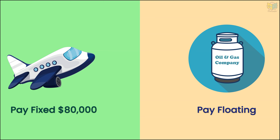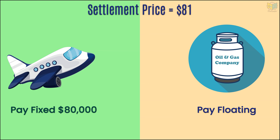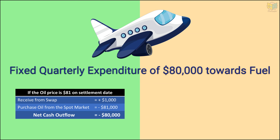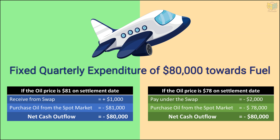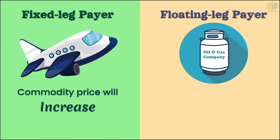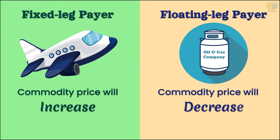At the end of the second quarter, if the price per barrel is $81, the airline will receive the net value of $1,000 from the dealer. Using the swap contract, the airline is able to maintain a fixed expenditure of $80,000 towards the quarterly consumption of fuel. The fixed leg payer feels that commodity prices will increase. The floating leg payer feels that commodity prices will decrease.